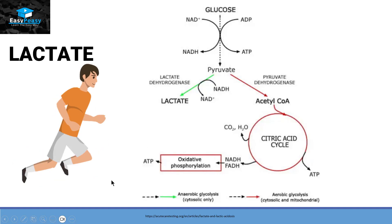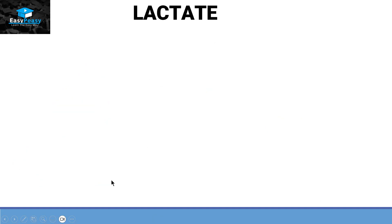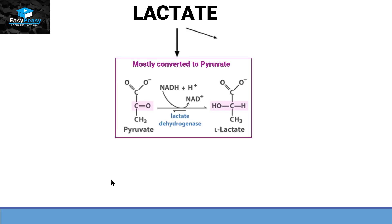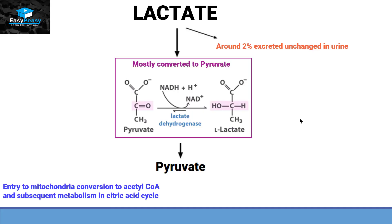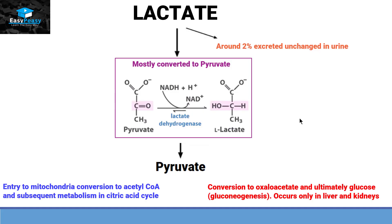This lactate can go back into the system in two ways. The majority of the lactate converts back into pyruvate with the help of an enzyme called lactate dehydrogenase, and 2% is excreted in the urine in the form of lactate. This pyruvate can then either enter the TCA cycle in the mitochondria or it can make glucose by the process of gluconeogenesis.